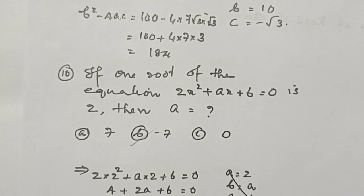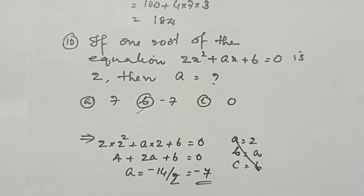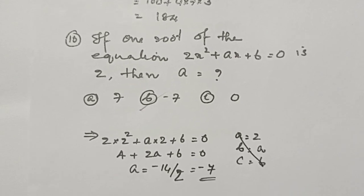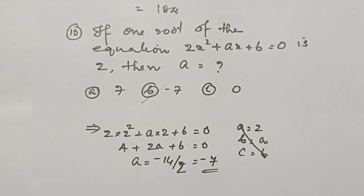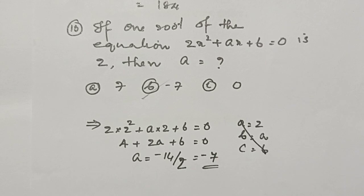If one root of the quadratic equation 2x squared plus ax plus 6 equals 0 is 2, then find the value of a. Since one root is given, we can substitute x equals 2 into the equation. Substituting the value of x as 2 and simplifying, we get the value of a as minus 7.